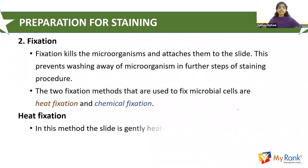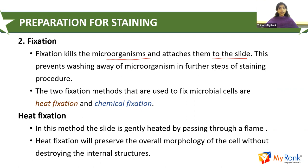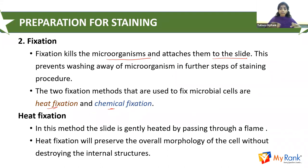The principle of fixation is that it kills the microorganisms and attaches them to the slide. This prevents washing away of microorganisms in further steps of the staining procedure. The two fixation methods used for microbial cells are heat fixation and chemical fixation. In heat fixation, the slide is gently passed through the flame of a Bunsen burner. Heat fixation will preserve the overall morphology of the cell without destroying the internal structure.